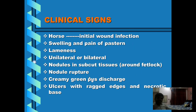Regarding clinical signs in horses: initially the signs appear as a wound infection, with swelling around the fetlock, and the animal will feel pain on palpation. When walked, the animal shows signs of lameness. This may be unilateral or bilateral. Most of the time, hind limbs are more commonly involved compared to forelimbs, perhaps due to more unsanitary or unhygienic conditions on the hind limbs.